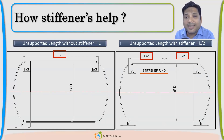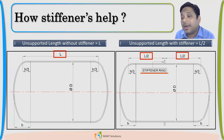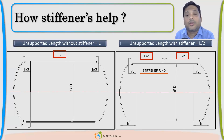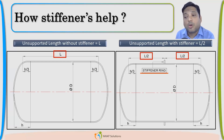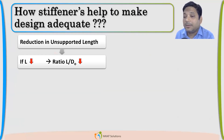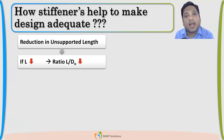The stiffener will divide the total unsupported length. If I place it exactly in between, it will divide the total length L into two parts — L/2 and L/2. Once L has been reduced, the L/D ratio will go down. If L is half, the L/D ratio also becomes half.